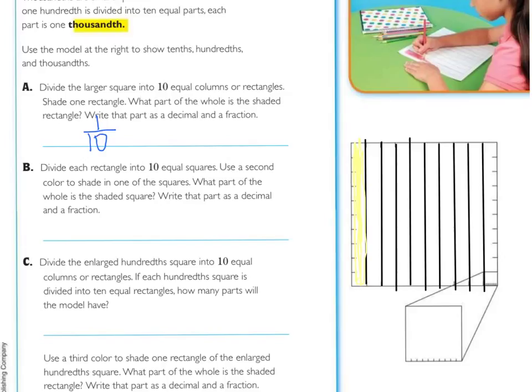They want you to also write that as a decimal and a fraction. So one tenth, the decimal, that is the same as one tenth, is zero, decimal, one. We will not say point one. We will always say decimal one.